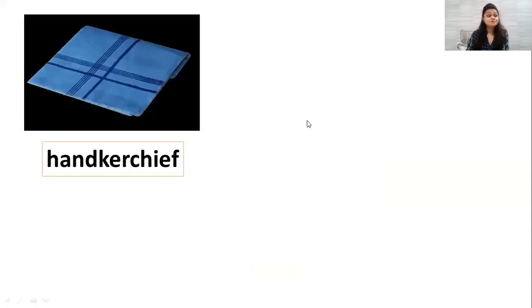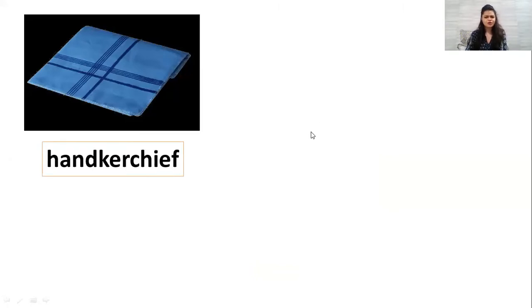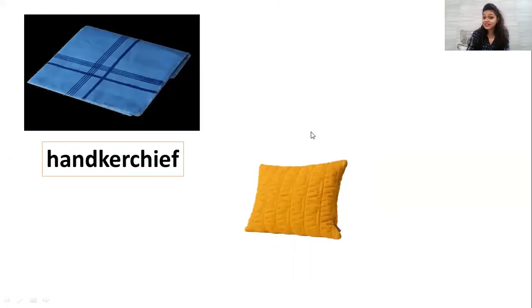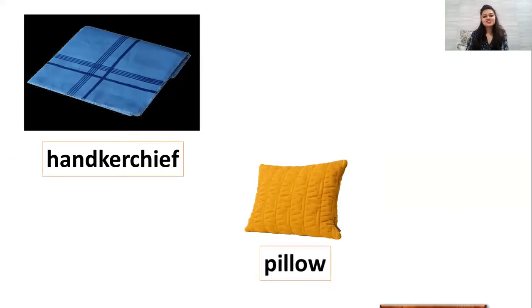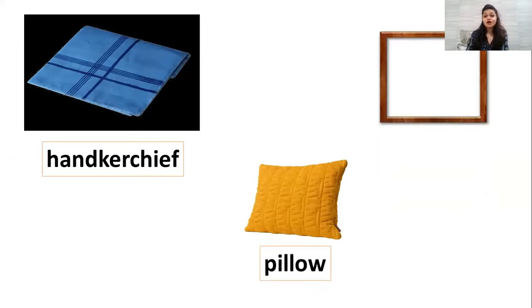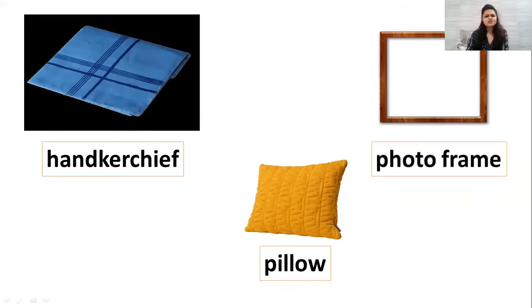Let's see what else. That's right. That's a handkerchief. Handkerchief is also square in shape. Oh yes, pillow. Pillow is also in square shape. Oh, look at it. Wow, such a nice photo frame. And even that's square in shape.